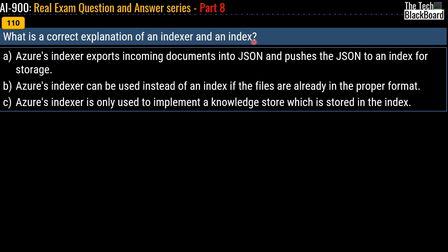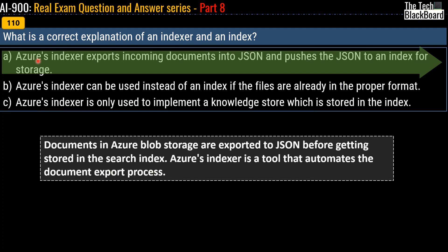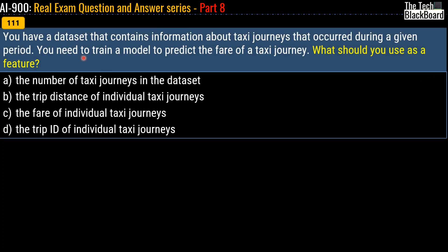Question 110: What is the correct explanation of an indexer and index? The options are: A) Azure's indexer exports incoming documents into JSON and pushes the JSON into an index for storage; B) Azure's index can be used instead of an indexer if files are already in the proper format; C) Azure's indexer is only used to implement a knowledge store stored in the index. The correct answer is option A. Documents in Azure Blob Storage are exported to JSON before being stored in the search index; the Azure indexer is a tool that automates this document export process.